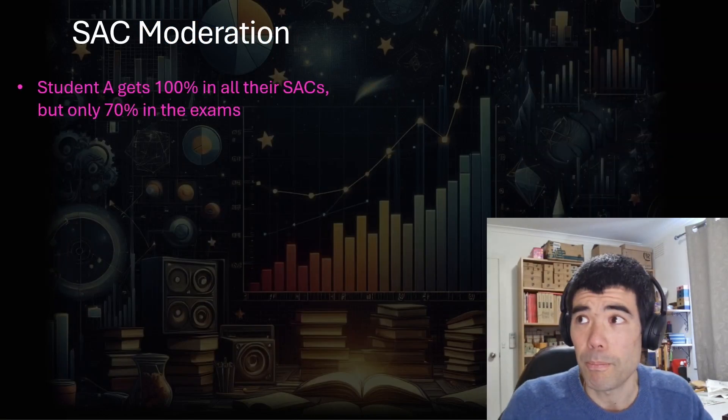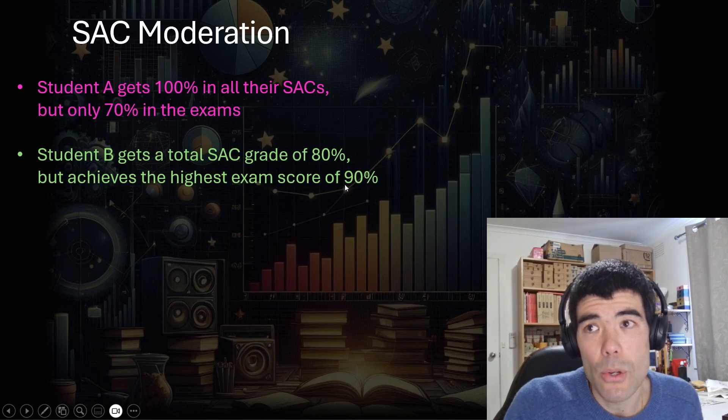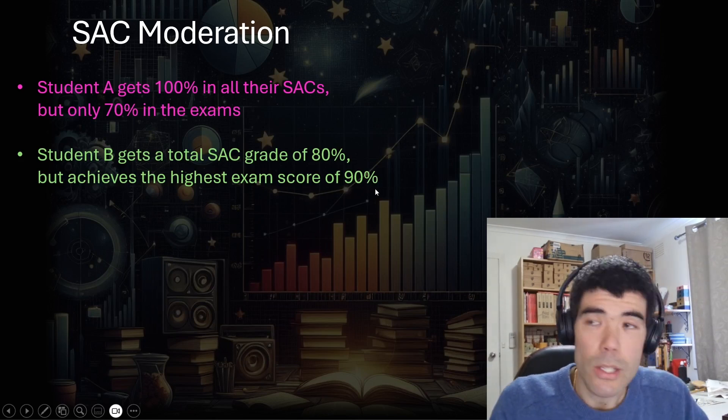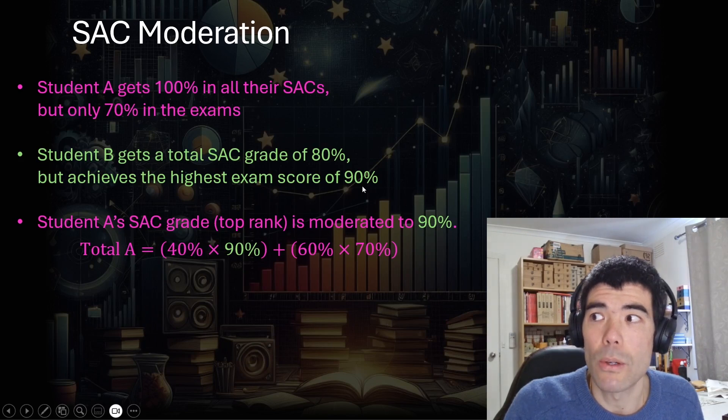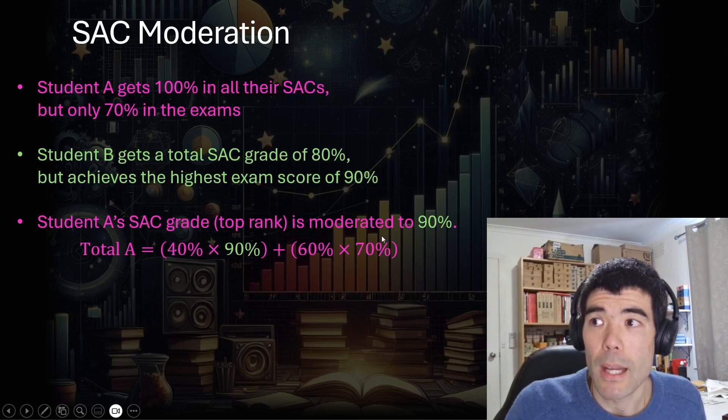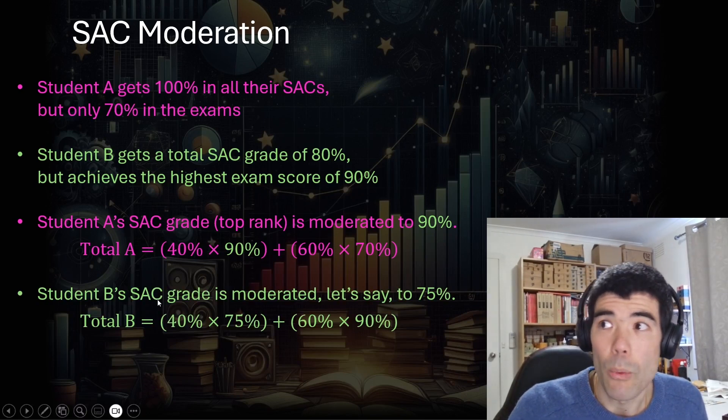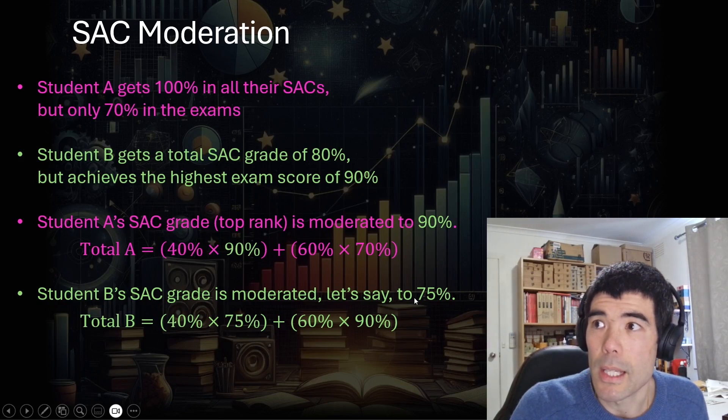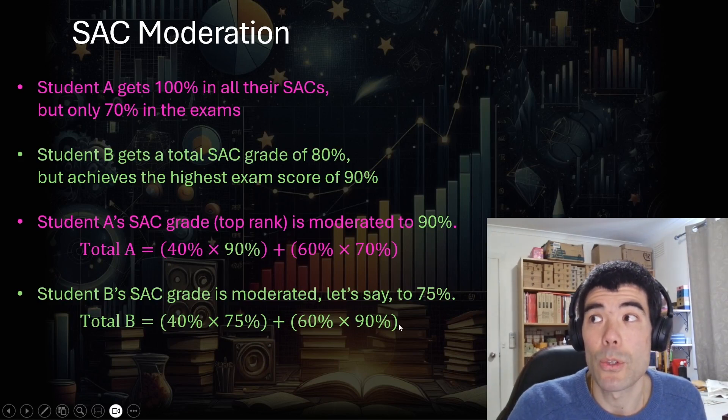So let's take an example. Let's say student A gets 100% in all their SACs, but only 70% in their exams. Whereas student B gets a lower SAC score, but actually gets the highest exam score of 90%. So that top exam score is used to moderate the SAC scores. Now student A's SAC grade will be moderated to 90%, because they're pinned to that top exam score. But once we look at student A's overall score, let's say this is maths. So the SACs count for 40%, and the exams count for 60%. They're not actually going to do as well as student B. Now student B's SAC grade, they weren't the top rank, so we don't know exactly how their SAC is moderated. Let's say it goes down slightly to 75%. But once we calculate 40% times 75%, but their 90% which they got in the exams count for 60%, they actually end up doing better than student A.